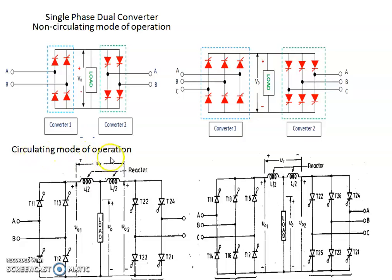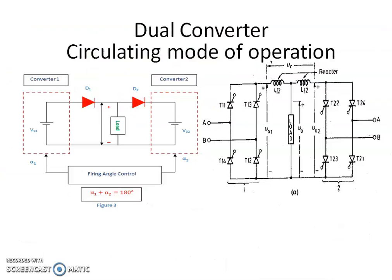In the circulating mode of operation of a dual converter, both converter 1 and converter 2 operate simultaneously. Circulating mode of dual converters is also of two types: single-phase dual converter and three-phase dual converter. In circulating mode of operation, the two converters operate simultaneously. There is an output voltage V01 for converter 1 and V02 for converter 2. The relationship between converter 1 and converter 2 firing angles is: alpha 1 plus alpha 2 equals 180 degrees. We place an inductor or reactor in series with the output of both converter 1 and converter 2, in order to reduce the effect of the circulating current.